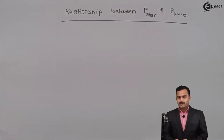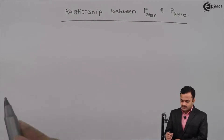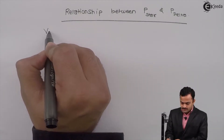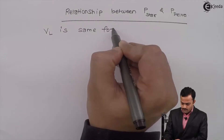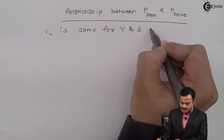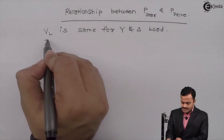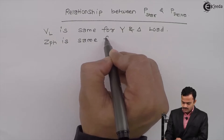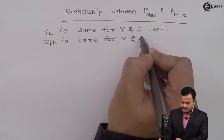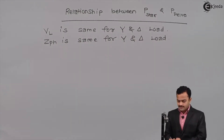While deriving the relationship between P_star and P_delta, two things we are keeping in mind. First, line voltage is the same for star and delta load. Second, Z_PH is also the same for star and delta connected load. So let's start with the relationship.